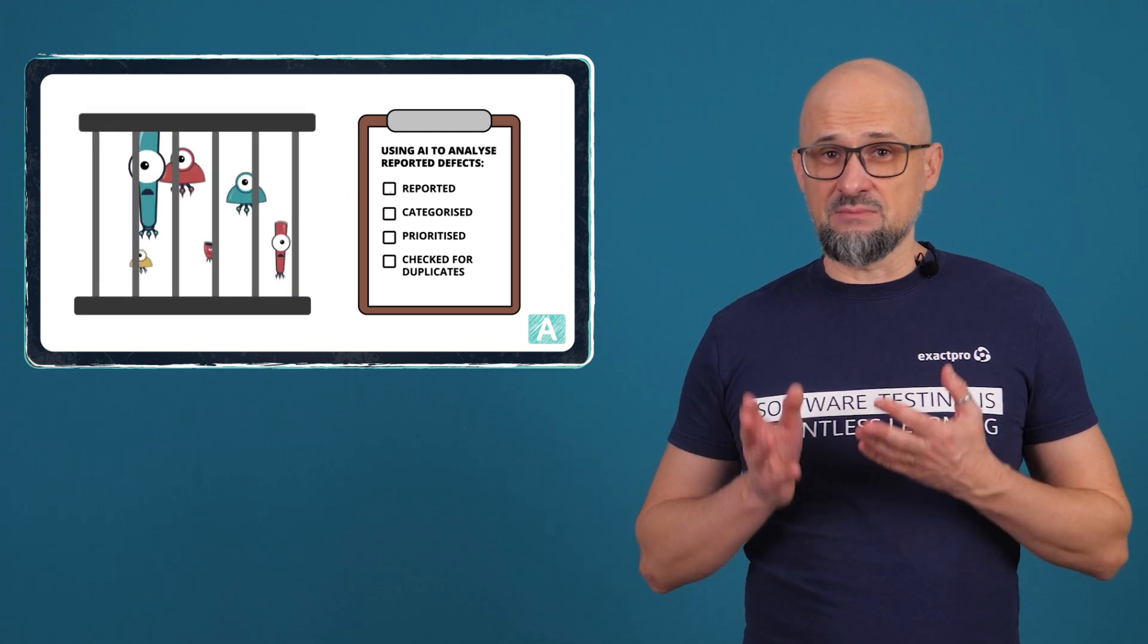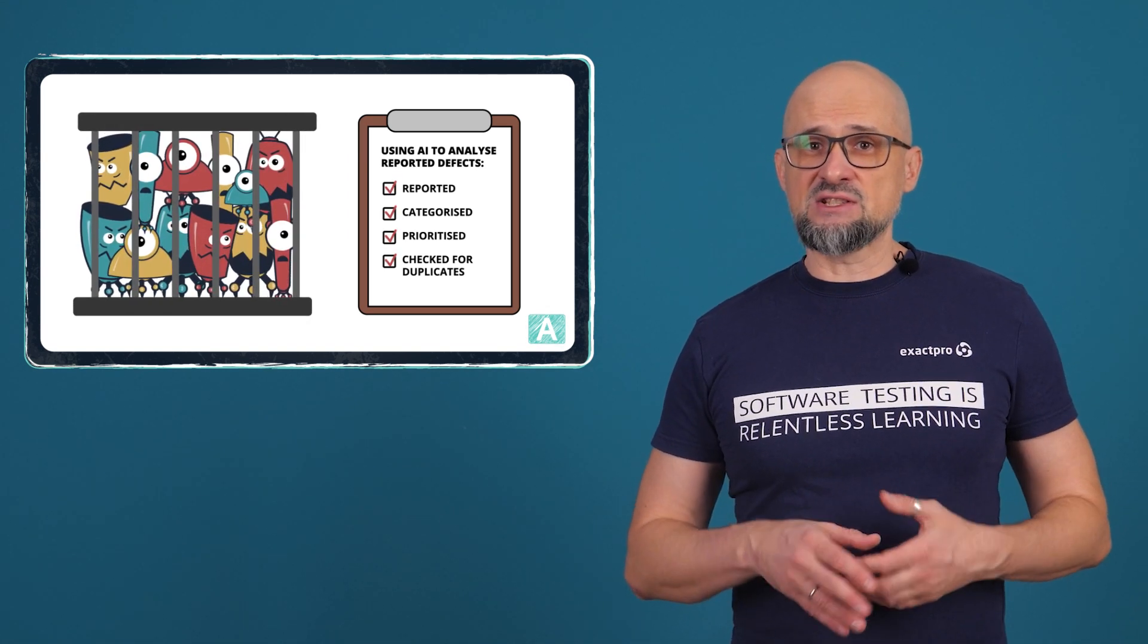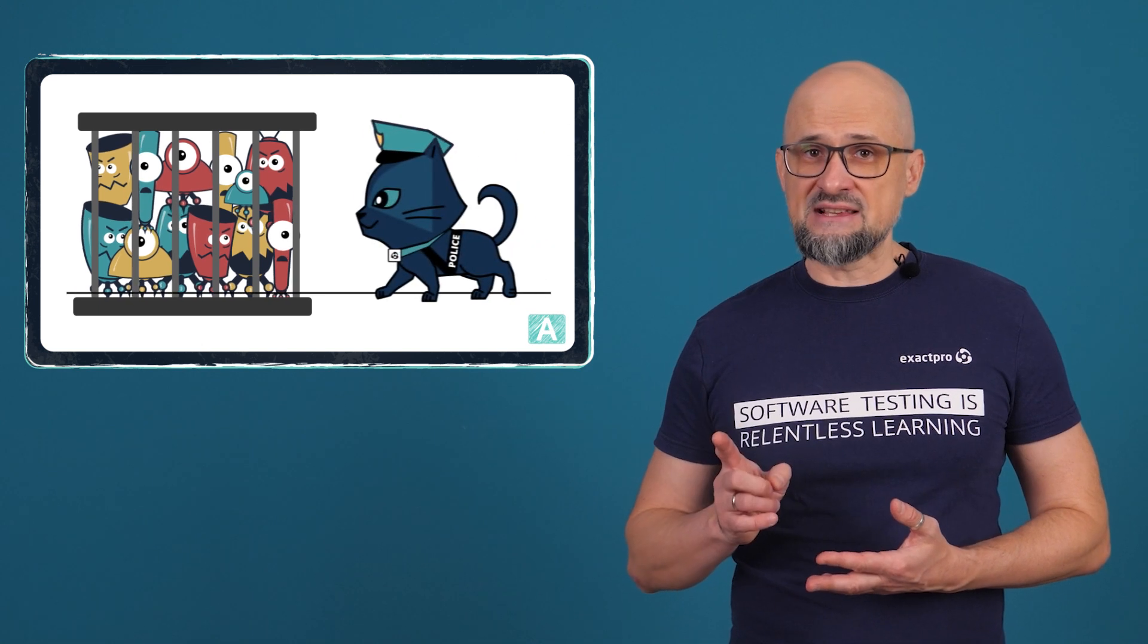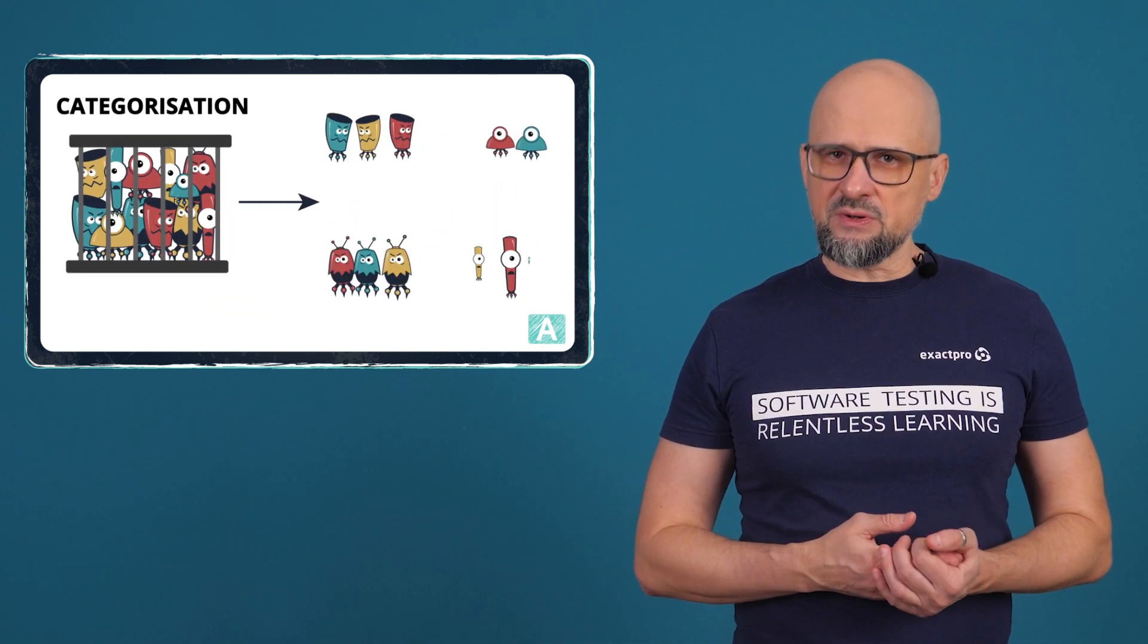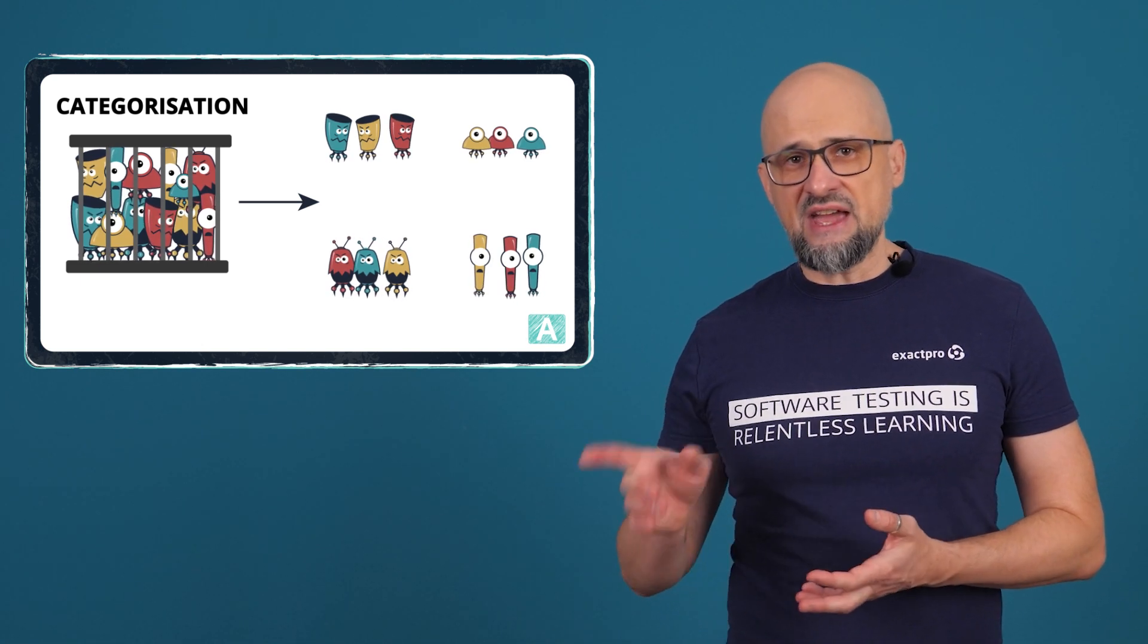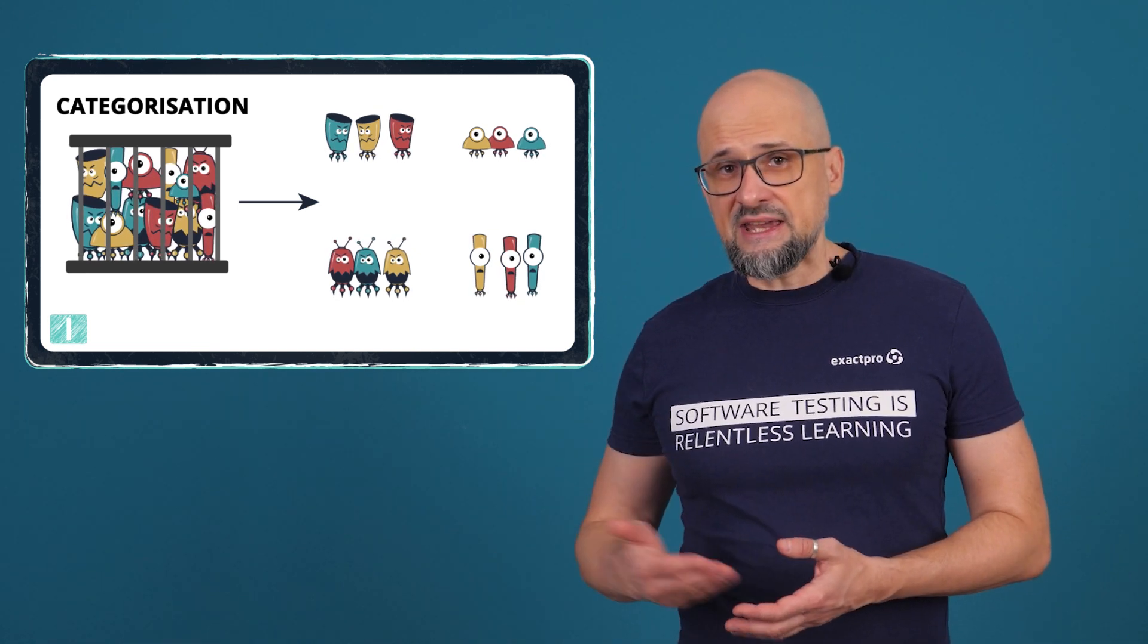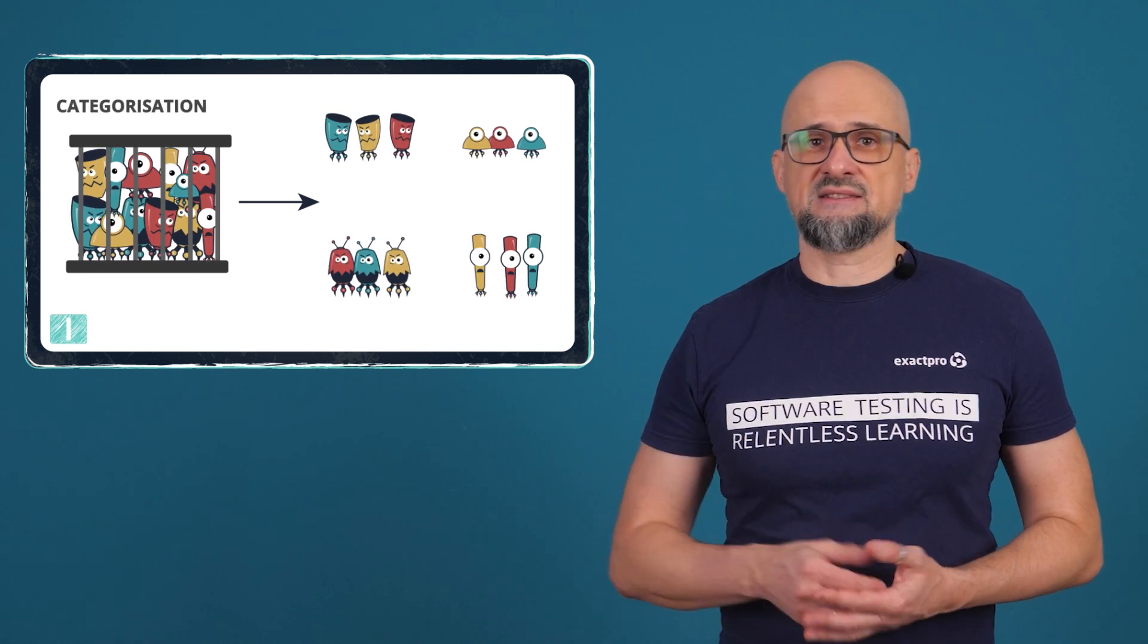Filed defects need to be reported, categorized, prioritized, and checked for duplicates. This activity is often called defect triage or analysis. It helps us optimize the time spent on defect resolution. This can be assisted by AI through categorization. Natural language processing can be used to analyze defect reports to obtain additional information that can be provided alongside other metadata to clustering algorithms. They, in turn, can identify suitable defect categories and highlight similar or duplicate defects.